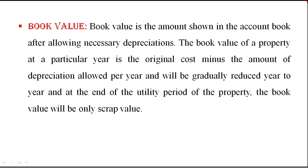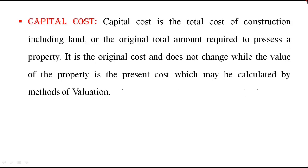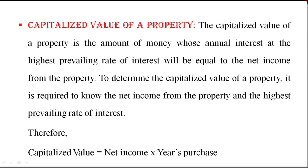Book value: the amount shown in the account books after allowing necessary depreciations. The book value of a property at a particular year is the original cost minus the amount of depreciation allowed per year — it will be gradually reduced year to year, and at the end of the utility period the book value will be only the scrap value. Capital cost: the total cost of construction including land, or the original total amount required to possess a property. It is the original cost and does not change, while the value of property is the present cost, which may be calculated by the method of valuation.